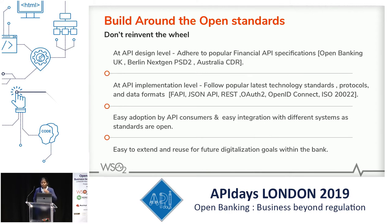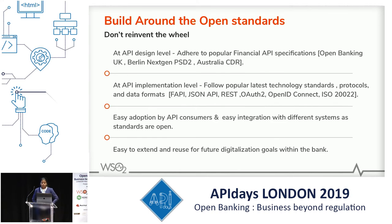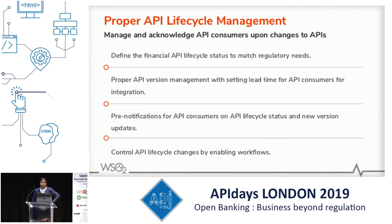In API design there are well-known standards like Open Banking UK, Berlin NextGen PSD2, and globally Australia's CDR has been released, and in Mexico there's also a separate effort underway. If banks develop custom ones there will be overhead added, but if they use these popular standards, those are well-established with strong communities. From the API implementation level, it's also important to think about popular technology standards like FAPI for financial-grade API security, OAuth, OpenID Connect, and protocols like REST and SOAP, and data formats like JSON and XML.